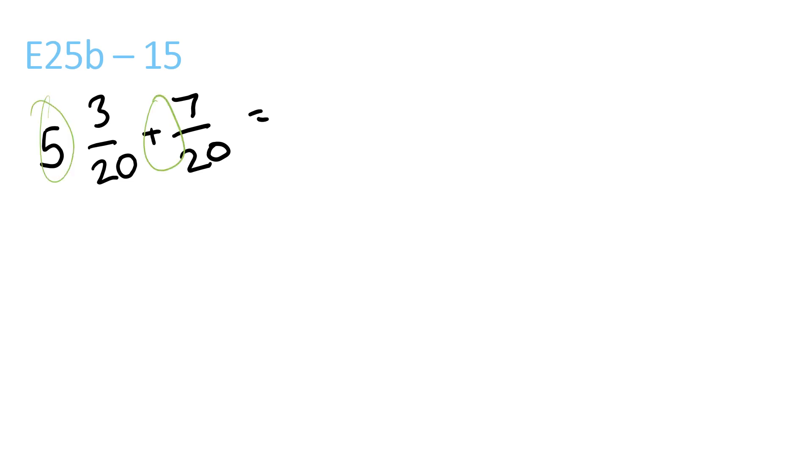5 plus nothing is 5. 3 plus 7 is 10 over 20. 10 and 20 both are divisible by 10. So it's 5 and 10 divided by 10 is 1, and 20 divided by 10 is 2.